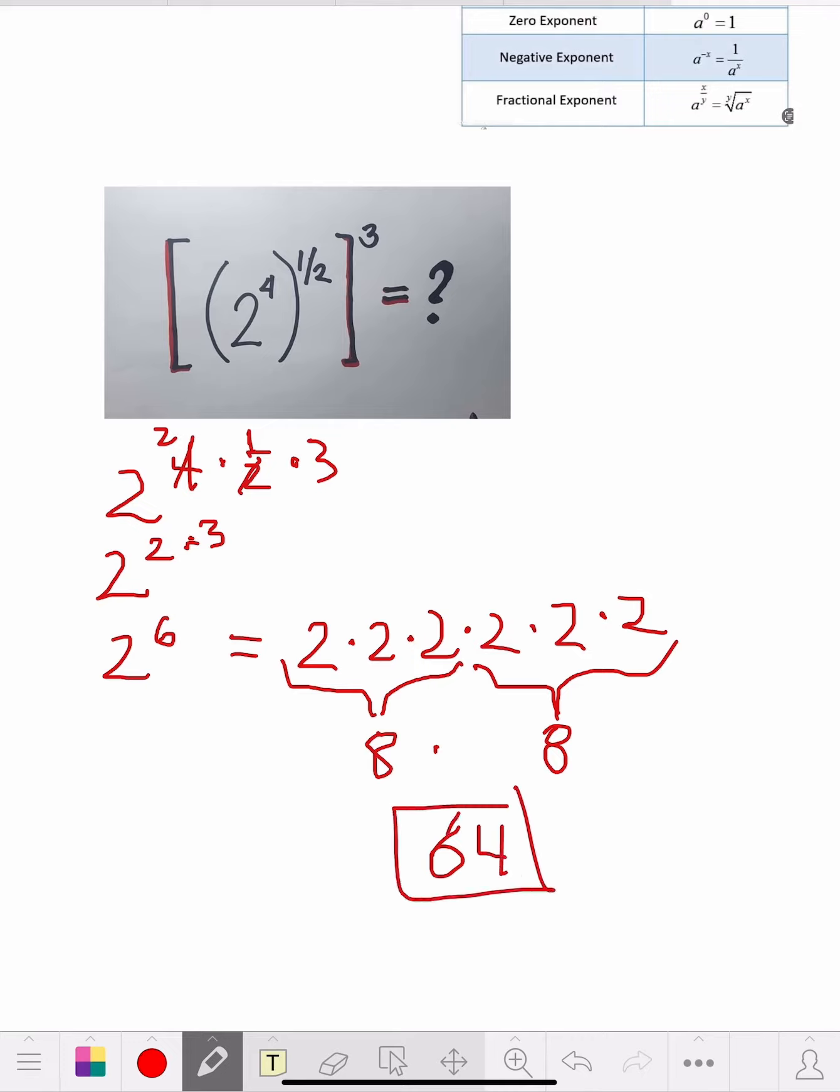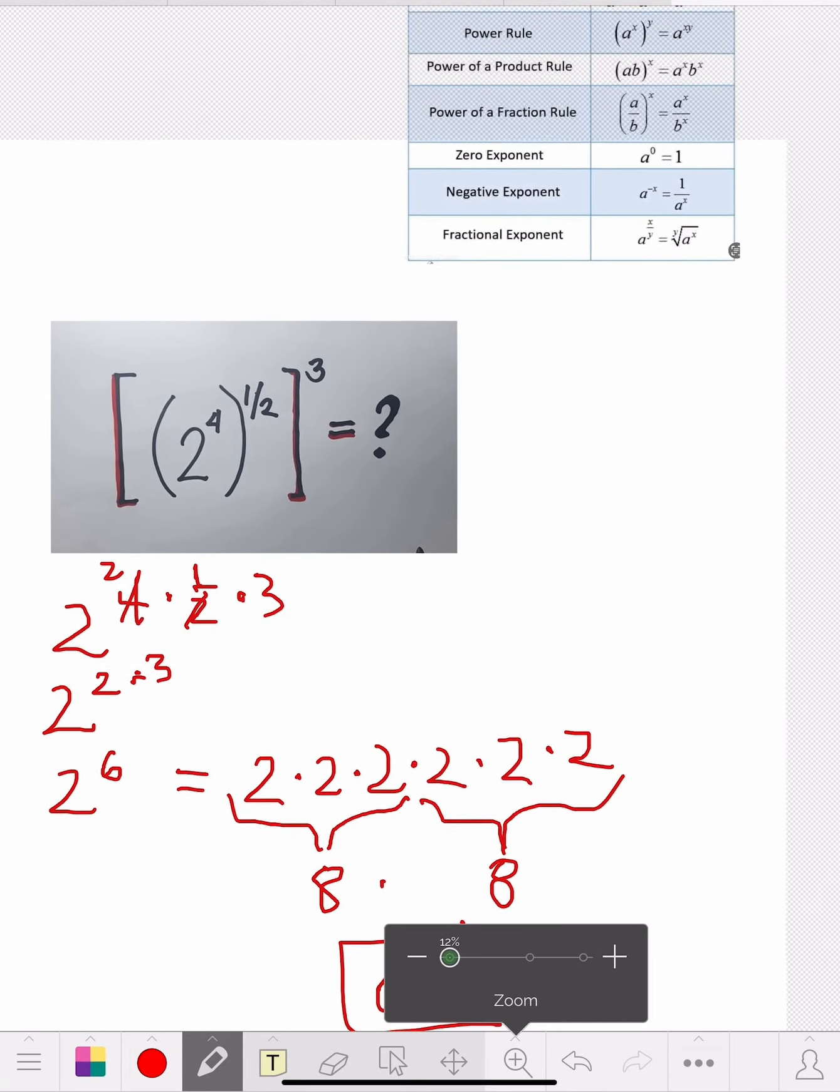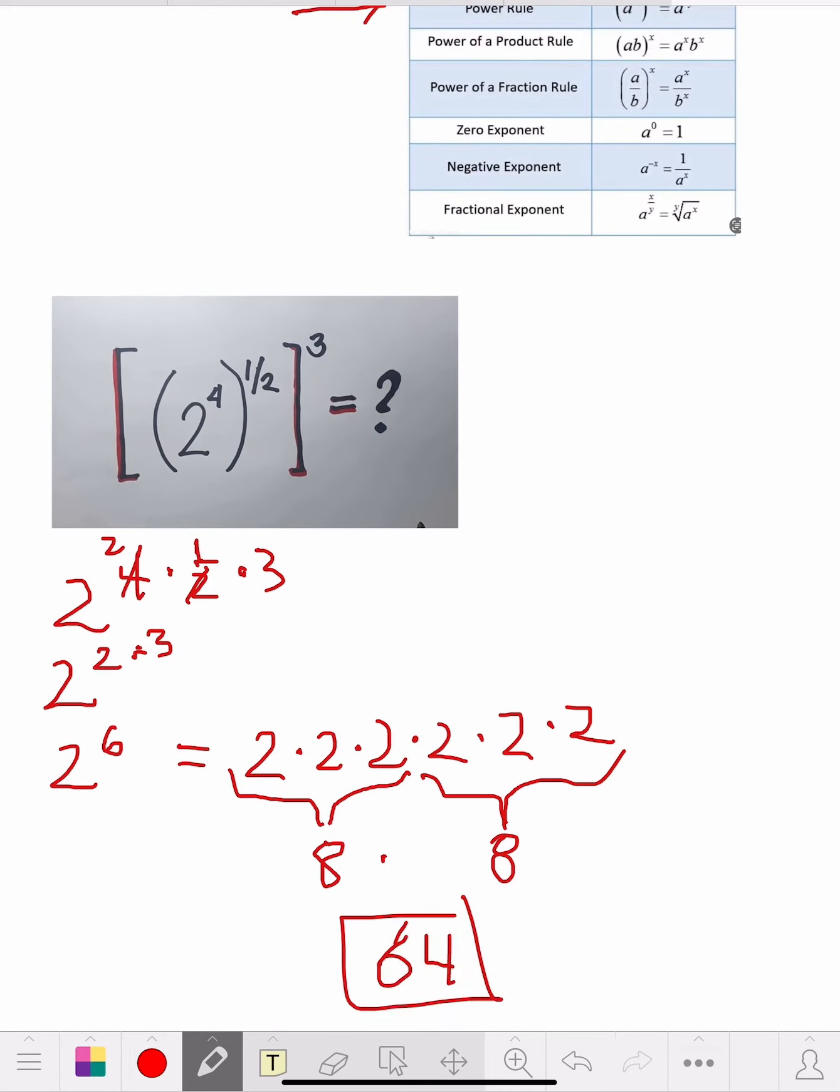But you see how we broke this down? And even when we get the two to the sixth power, you could have went two times two times two. If you had a calculator, you could have put in two to the sixth power and come up with that. But you see how you can break it down easy, too? And that's basically all there is to it.